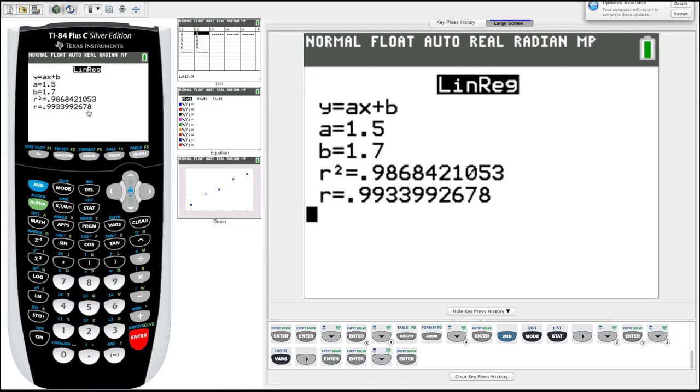There it is. Y equals ax plus b is the form. A will be 1.5, B will be 1.7. You could have manually entered that into y1 yourself, but it prompts you to, if it wants to store it automatically, that's it.